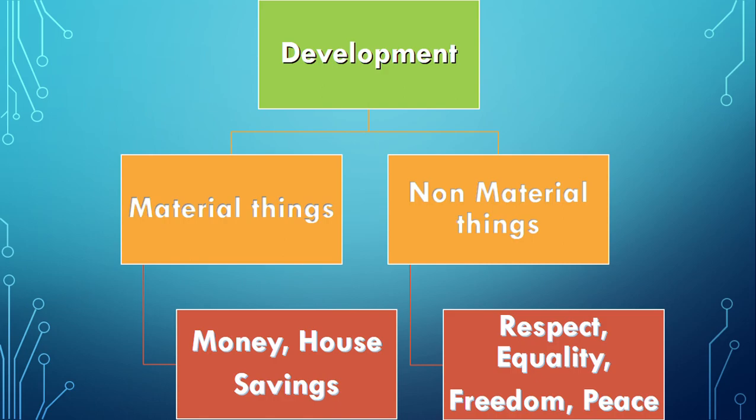When we talk about money, it comes under material things. Everyone wants to earn money — if there is money, there is quality food, land, house, quality education for children, and so on. So for development, money or income is essential. Economic progress is a part of development because if there is money, everything can follow.